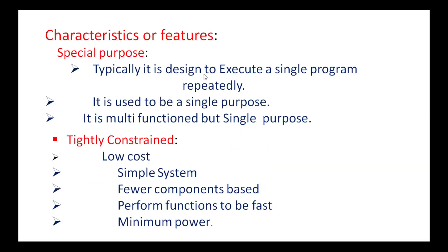The characteristics of an embedded system: First, special purpose. It is typically designed to execute a single program repeatedly. For example, a washing machine has multi-functions — wash, rinse, and spin — but it serves only a single purpose: washing. This is what special purpose means.